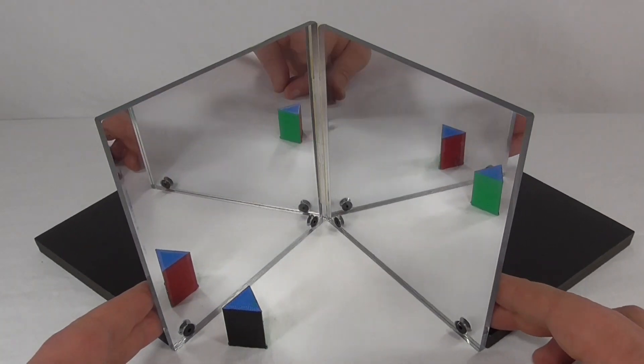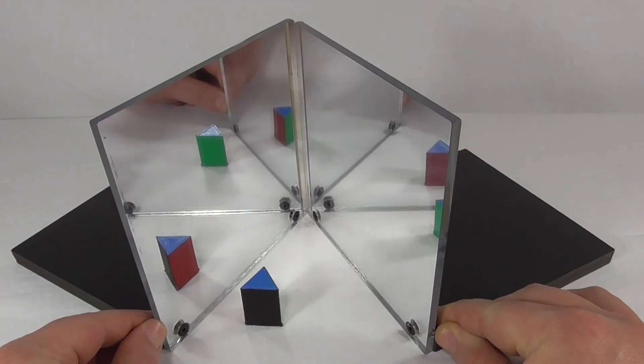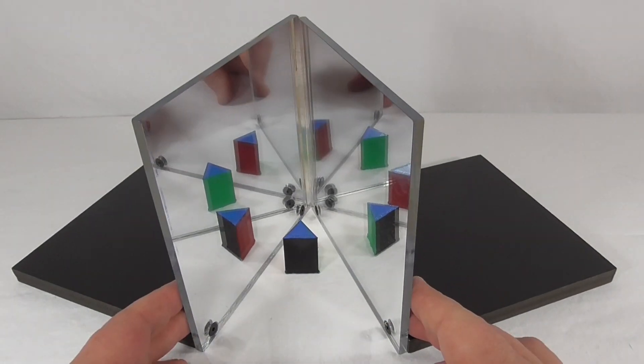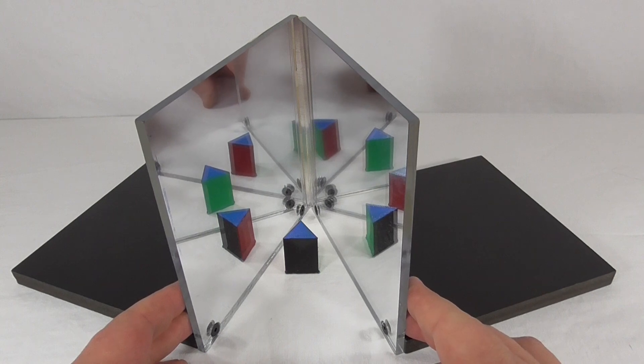You're changing the angle between the mirrors and counting the number of images. Do not count the object as an image, however. It helps to put your face close to the mirrors and at eye level to count those images.